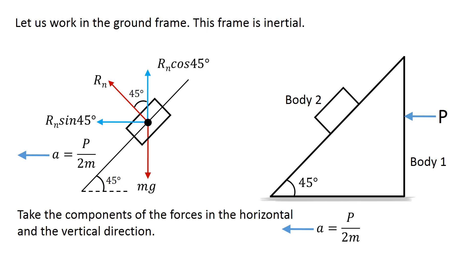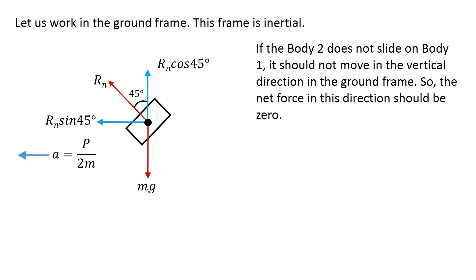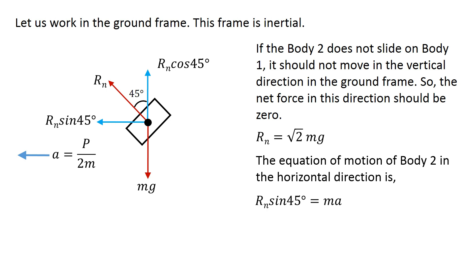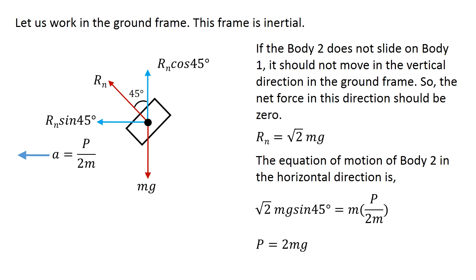Let's take the components of the forces in the horizontal and vertical direction. If body 2 does not slide on body 1, it should not move in the vertical direction in the ground frame. So the net force in this direction should be 0. Therefore, r cosine 45 degrees equals mg, which gives r equals square root of 2 times mg. The equation of motion of body 2 in the horizontal direction is r sine 45 degrees equals m times a. Keeping the value of r as square root of 2 times mg and the value of a as p over 2m in this equation, we get p equals 2 times mg, which is the required value of p to prevent the sliding of body 2 on body 1.